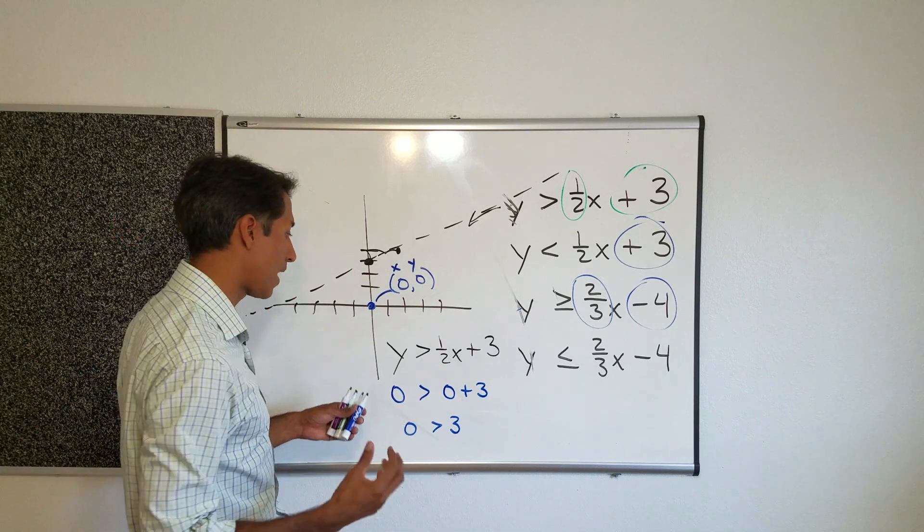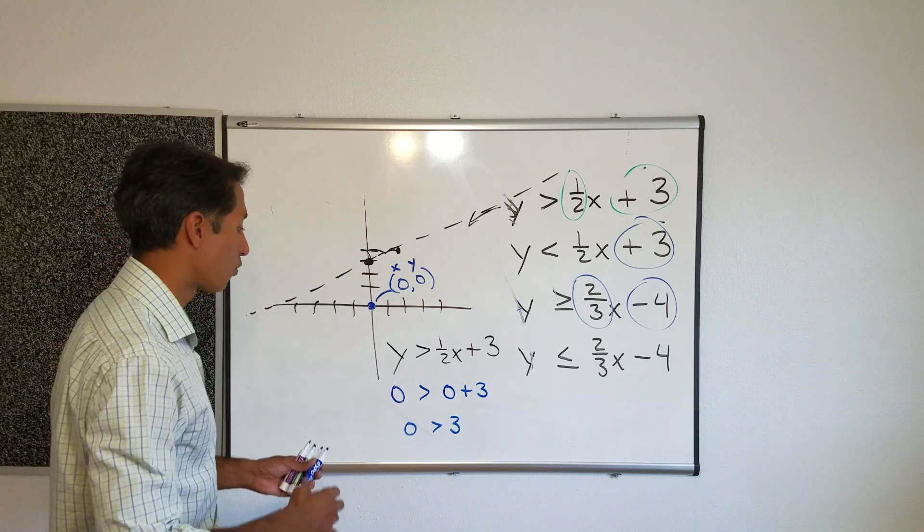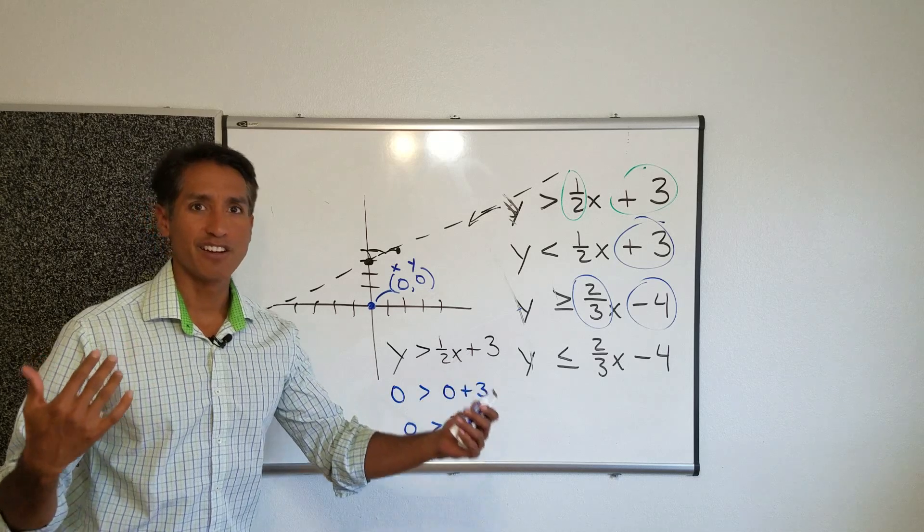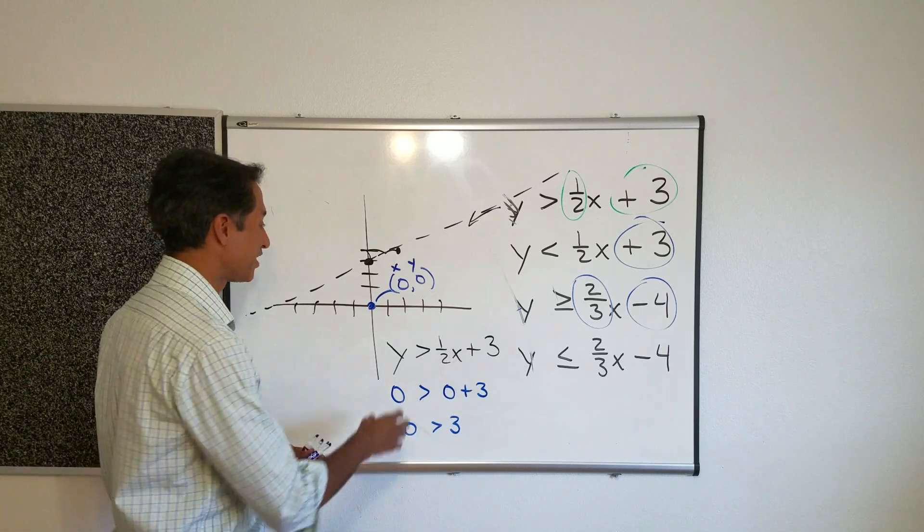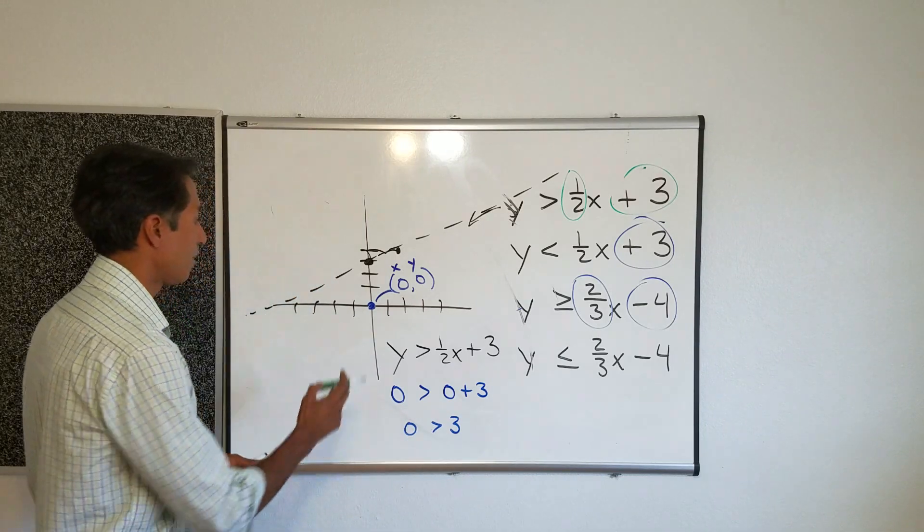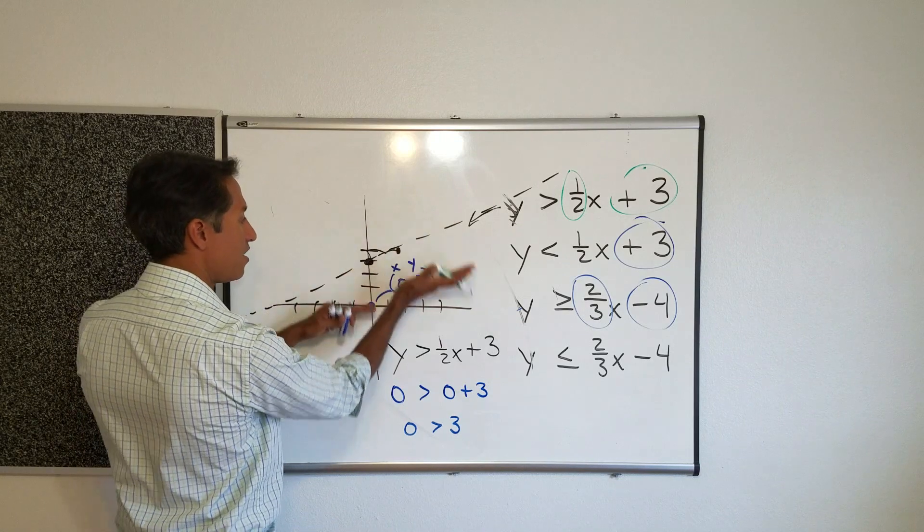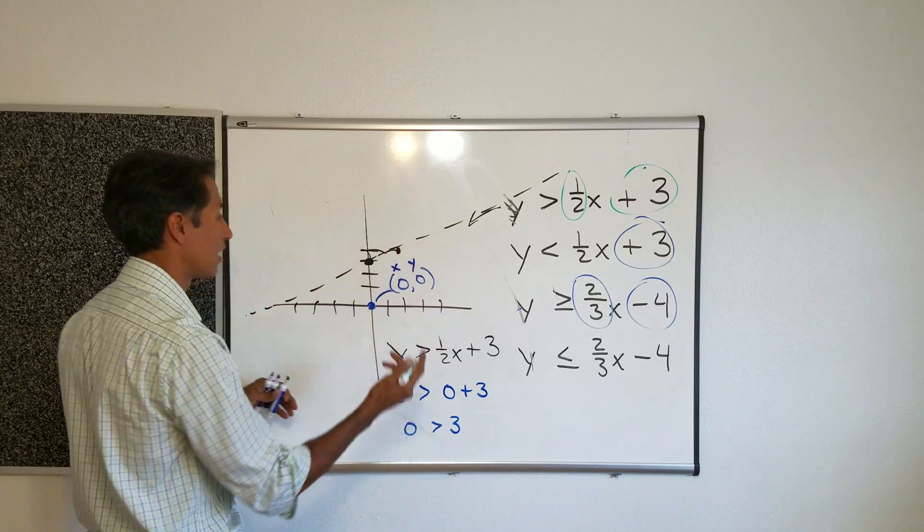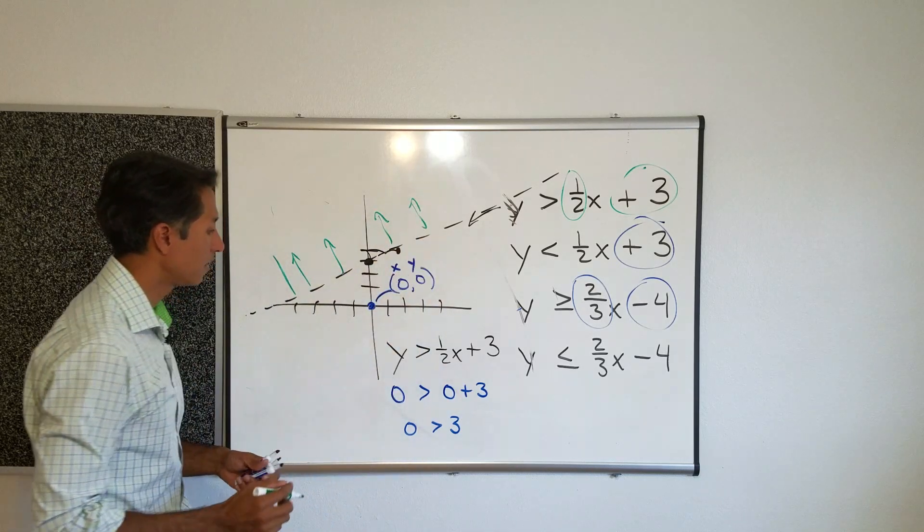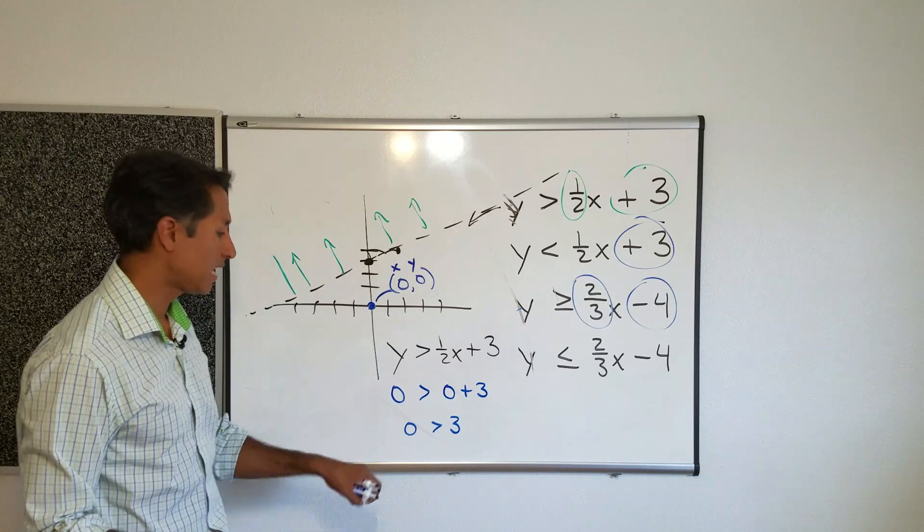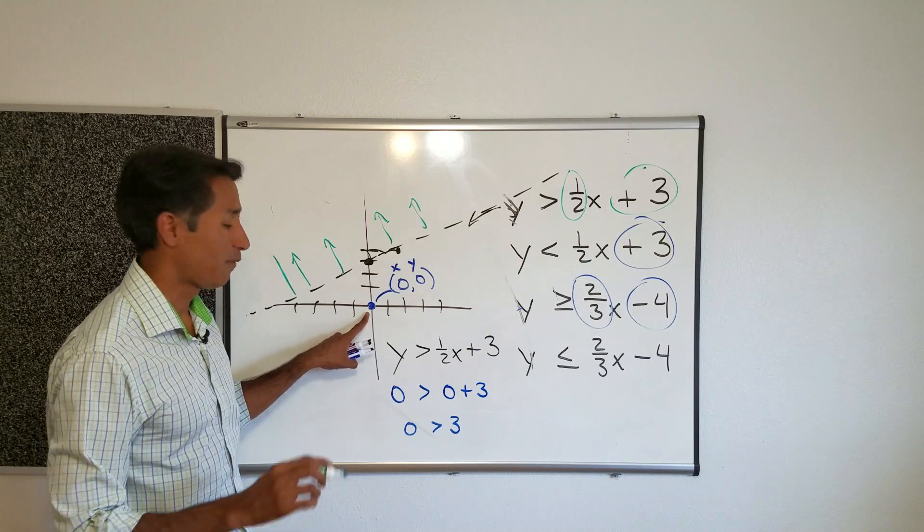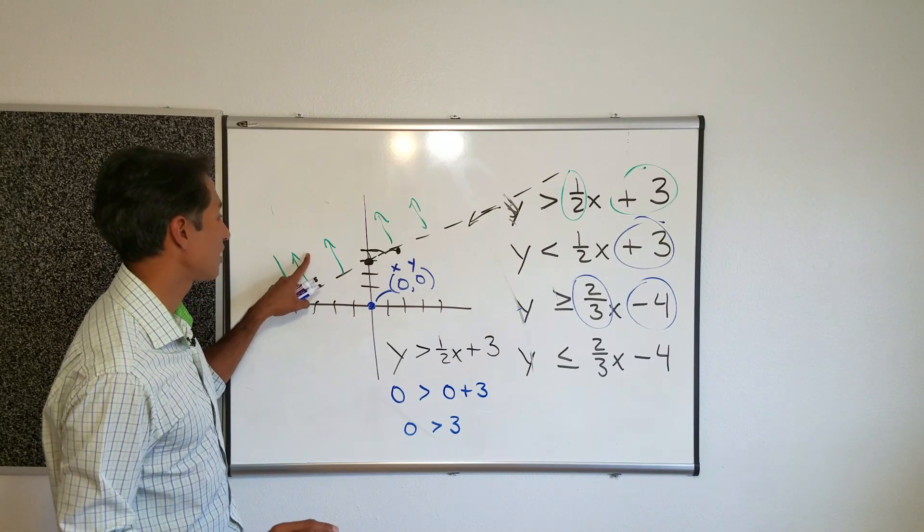Now, books teach this in different ways. I always try to keep it really simple and read the question to myself. Is zero greater than three? No. And so, because it is not going to work. Zero is not greater than three. Then this side down here or everything under the line is not a solution. Therefore, this side is the solution. So, again, we read it to ourselves and say, is zero greater than three? No. So, this point here does not work. And if it doesn't work, then the other side has to work.